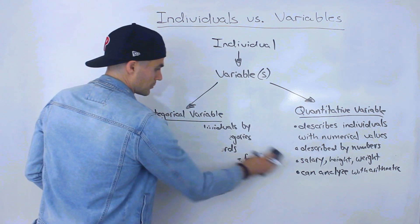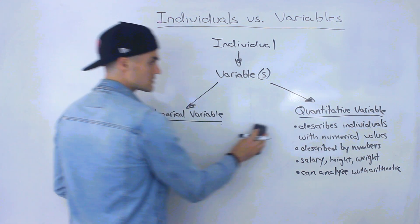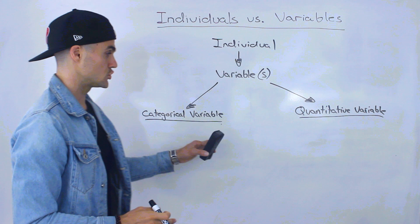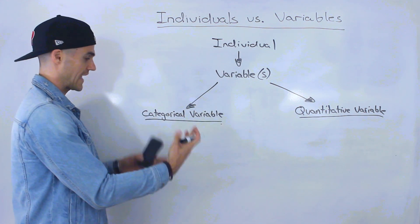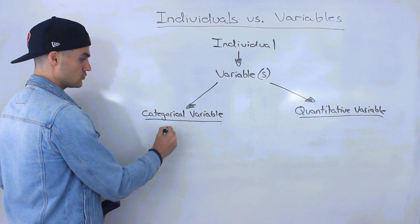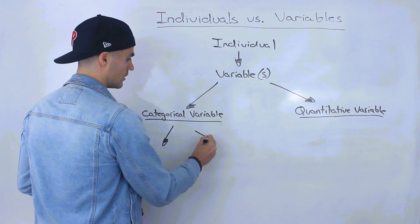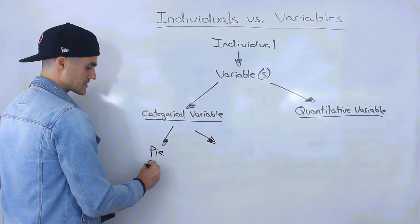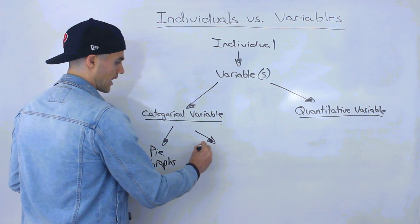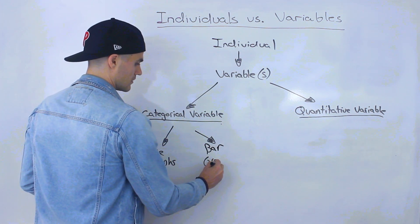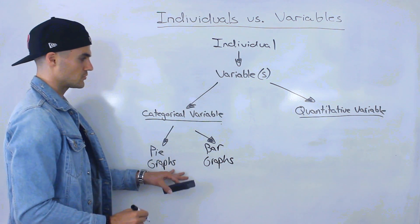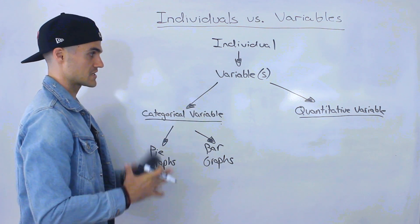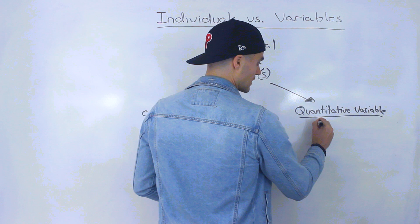Now, what we're going to do in the next couple of videos is we're going to go over some tools that visually show both of these variables, that can visually analyze them. And the two tools that we're going to go over for categorical variables are pie graphs and bar graphs. Both of these tools are used to visually show or visually analyze categorical variables in a set of data.